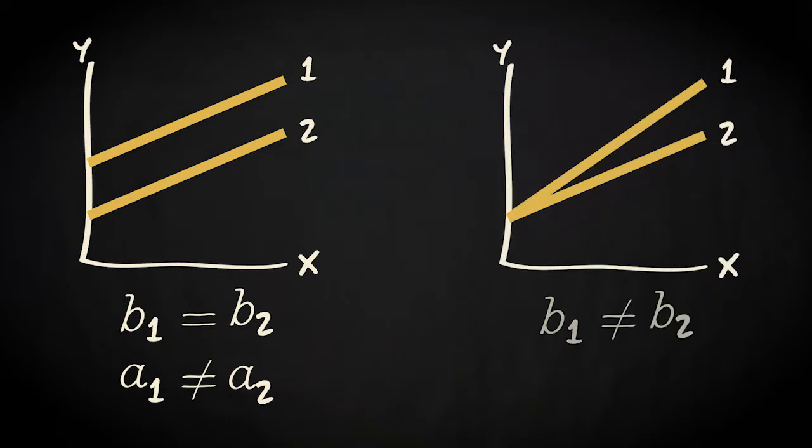These two regression lines have different regression coefficients. When x increases with one unit, y hat of line 1 increases more than y hat of line 2. Yet the intercepts of these two lines are the same, because they cross the y axis at the same spot.